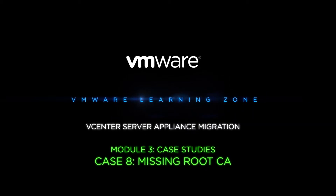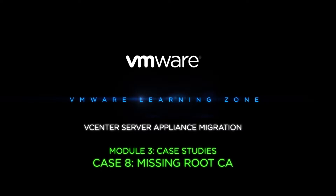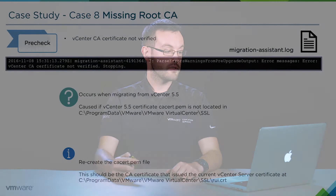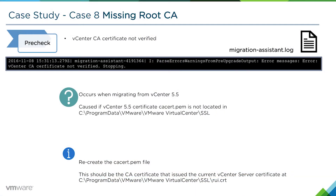In this final case study, it's another certificate issue that occurs during the pre-check phase. It will occur if the vCenter CA certificate is not verified. In the migration assistant.log, we'll see the error message 'vCenter CA certificate not verified' and the migration assistant pre-checks will fail.